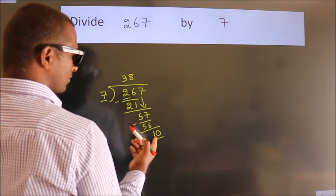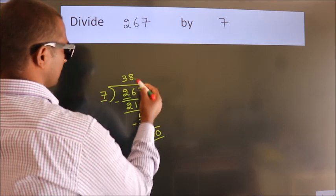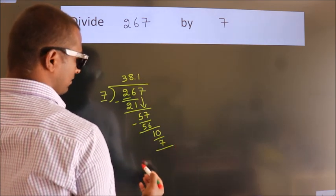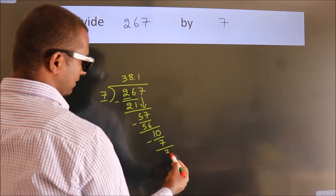A number close to 10 in the 7 table is 7 ones, 7. Now, we subtract. We get 3.